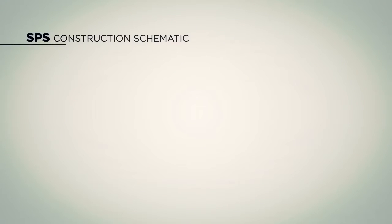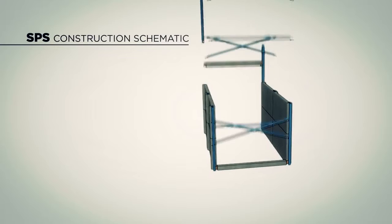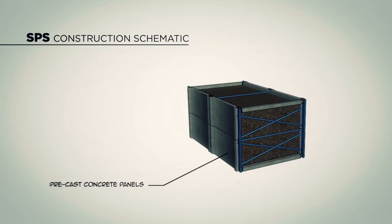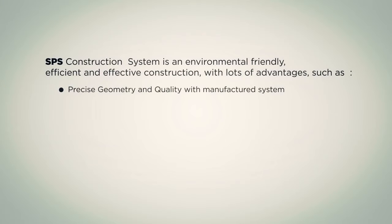The SPS construction system is an elongated container construction system that consists of three elements: precast concrete panels, fastener rods, and filler media. SPS construction system is an environmentally friendly, efficient, and effective construction system with lots of advantages.